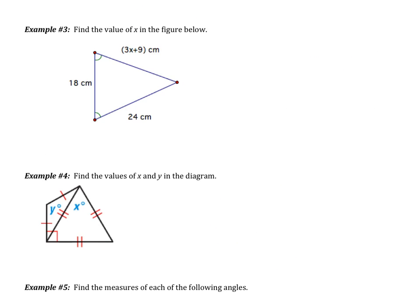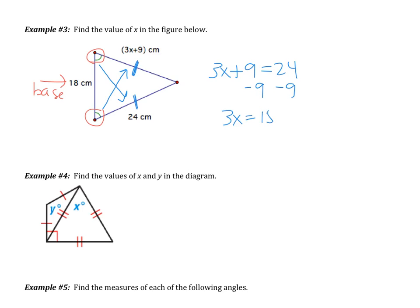Looking at example number 3: find the value of X in the figure below. We have an isosceles triangle with two congruent base angles. Those two angles are on the base, so 18 is the base. The sides across from these congruent angles are going to be congruent. So I get 3X plus 9 equals 24. Subtracting 9 gives 3X equals 15. Dividing by 3, X equals 5.